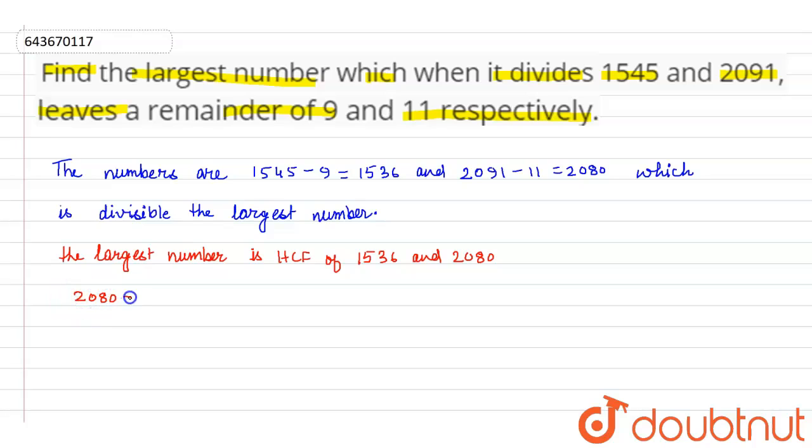2080 can be written as 1536 times 1 plus 544. Now 1536 can be written as 544 times 2 plus 448. Now 544 can be written as 448 times 1 plus 96.